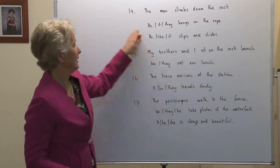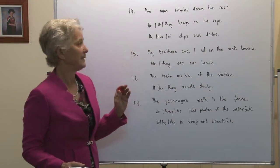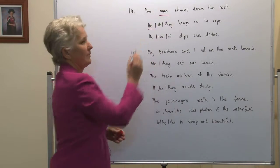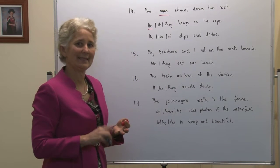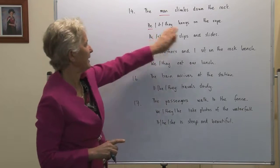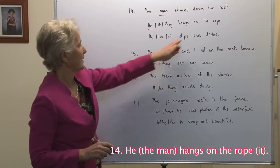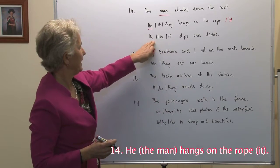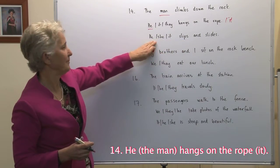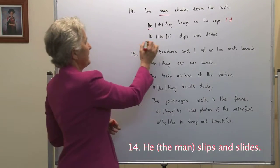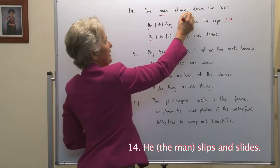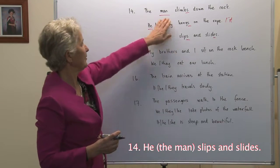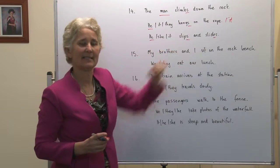Number fourteen: The man climbs down the rock. He, it or they hangs on the rope. We're talking about the man — we need he, masculine, third person, singular. It's the subject pronoun. He hangs on the rope. If we wanted to replace the rope, the thing, object, it's singular it. He slips and slides. We're referring to the man again — the man would once again be he, slips and slides. Notice in each case we've got the s ending, simple present tense. So the man climbs, he hangs, he slips and slides.